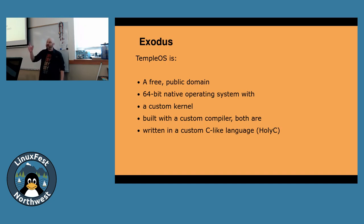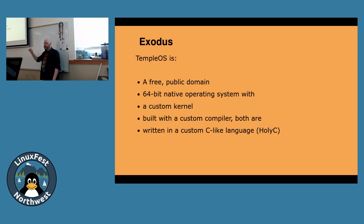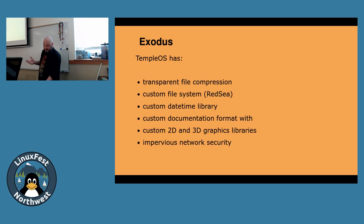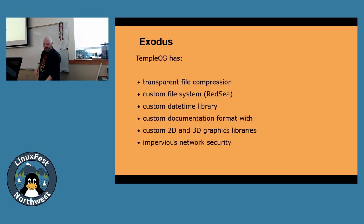Temple OS is free. It is licensed unencumbered — it's a public domain operating system. It's 64-bit native; it won't run in 32-bit emulation mode. It's got a custom kernel built with its own custom compiler, both written in a custom language called Holy C, which is C-like. It has transparent file compression, its own custom file system, its own custom date-time library, its own custom documentation format called DolDoc, custom 2D and 3D graphics libraries that exist inside the documents. And it is absolutely bulletproof when it comes to network security — because it doesn't have a network stack.